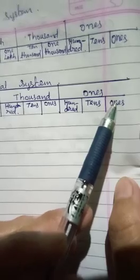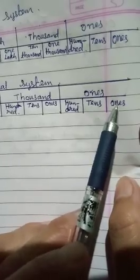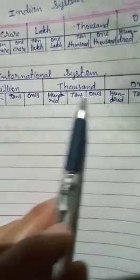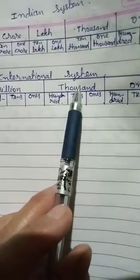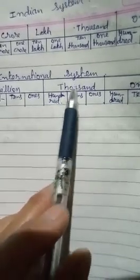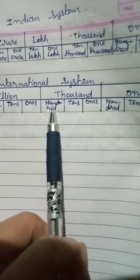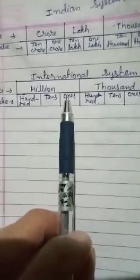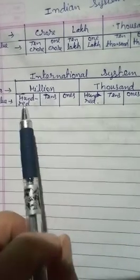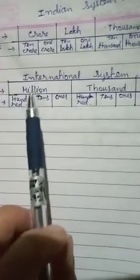So let us see how we count in the international system. We have ones of ones, tens of ones, hundreds of ones — that is the ones period. Then we have ones of thousands, ten thousands, hundred thousands. In Indian we have only up to ten thousand, but in international we have up to hundred thousands. Then we have one million, ten millions, hundred millions. In international, remember, we have three place values in each period.